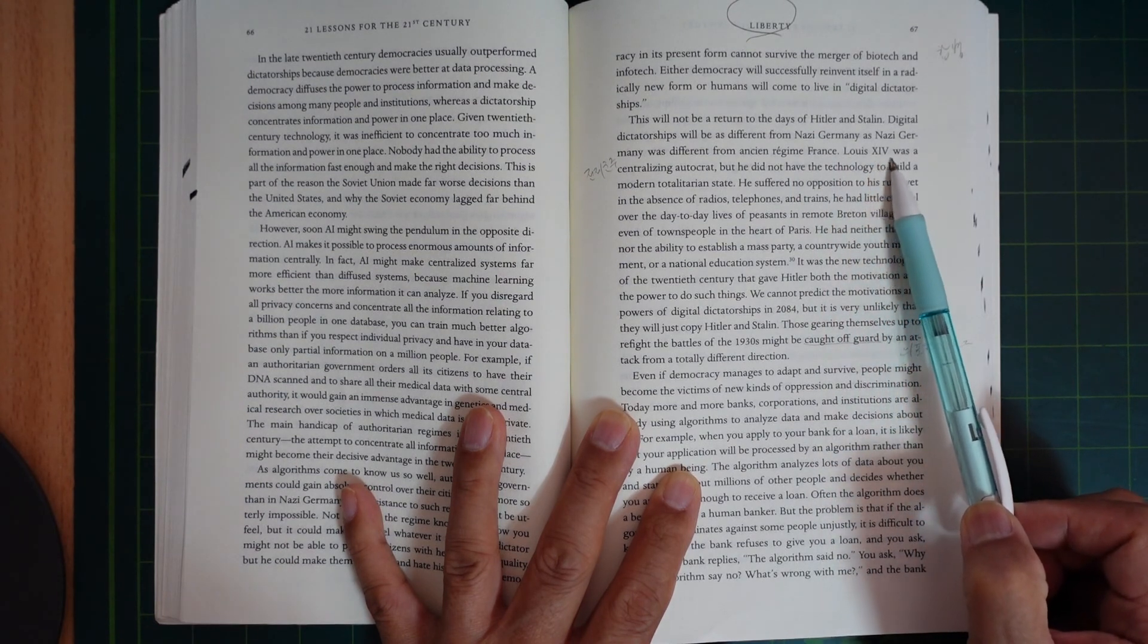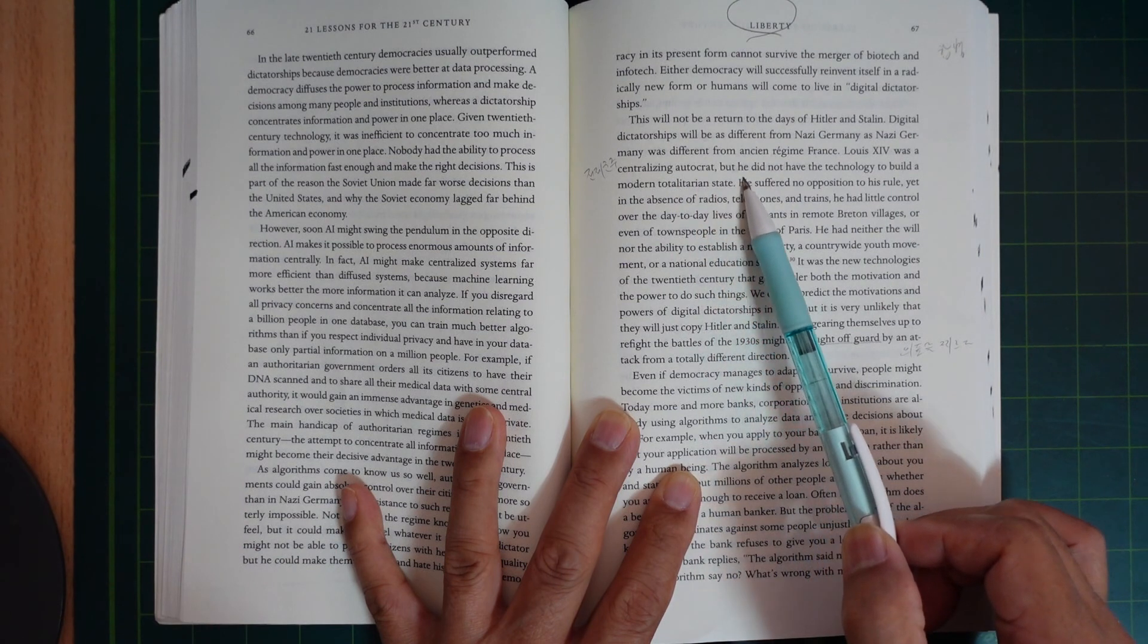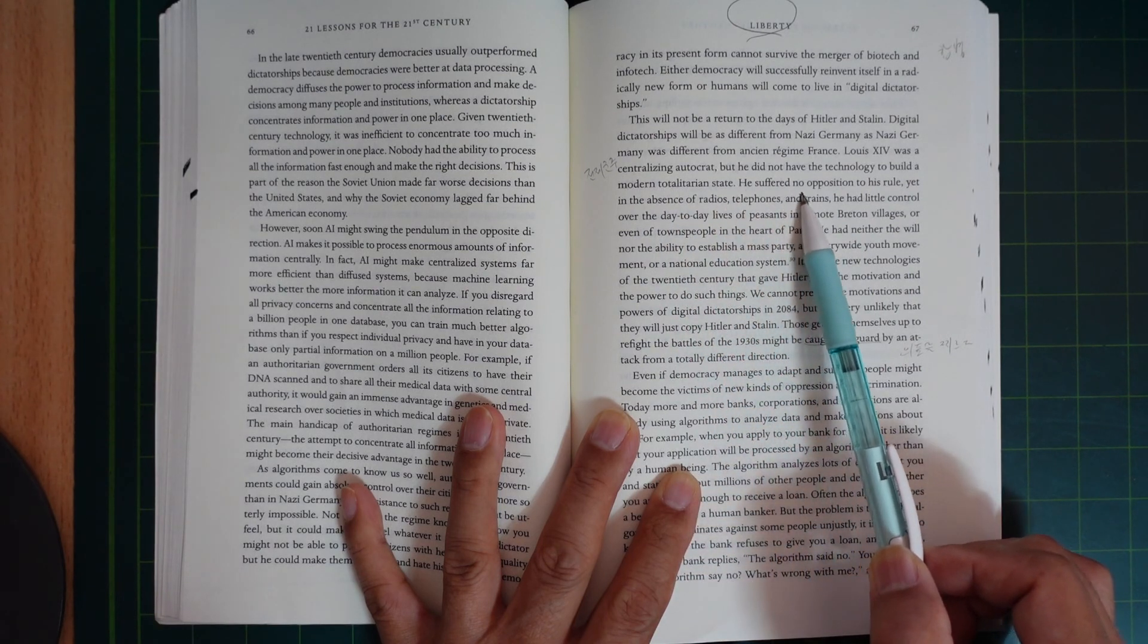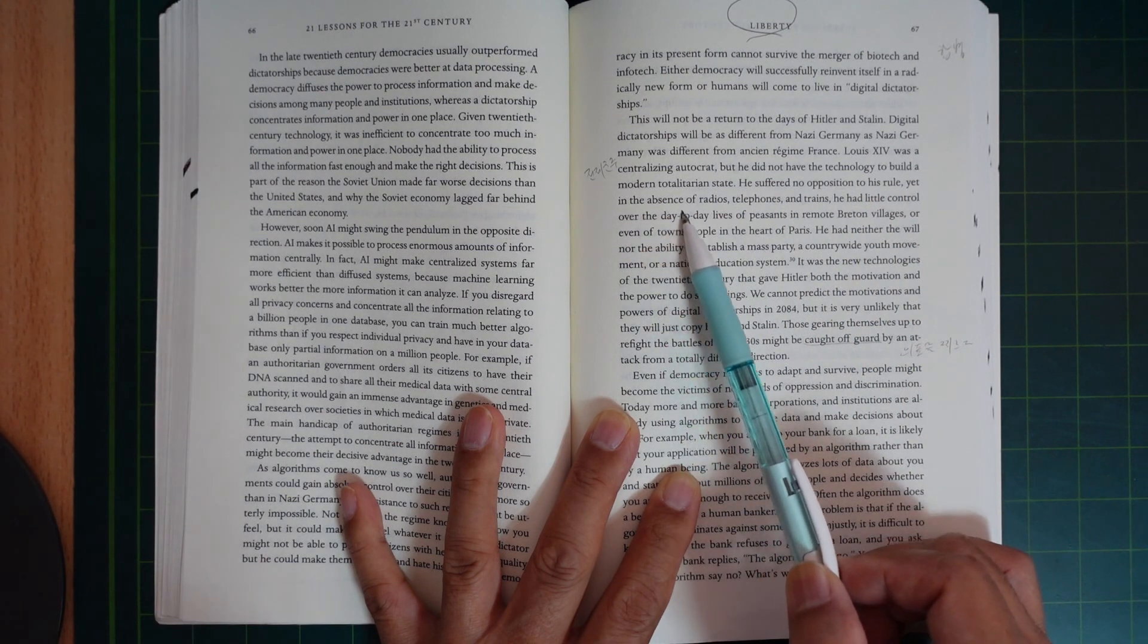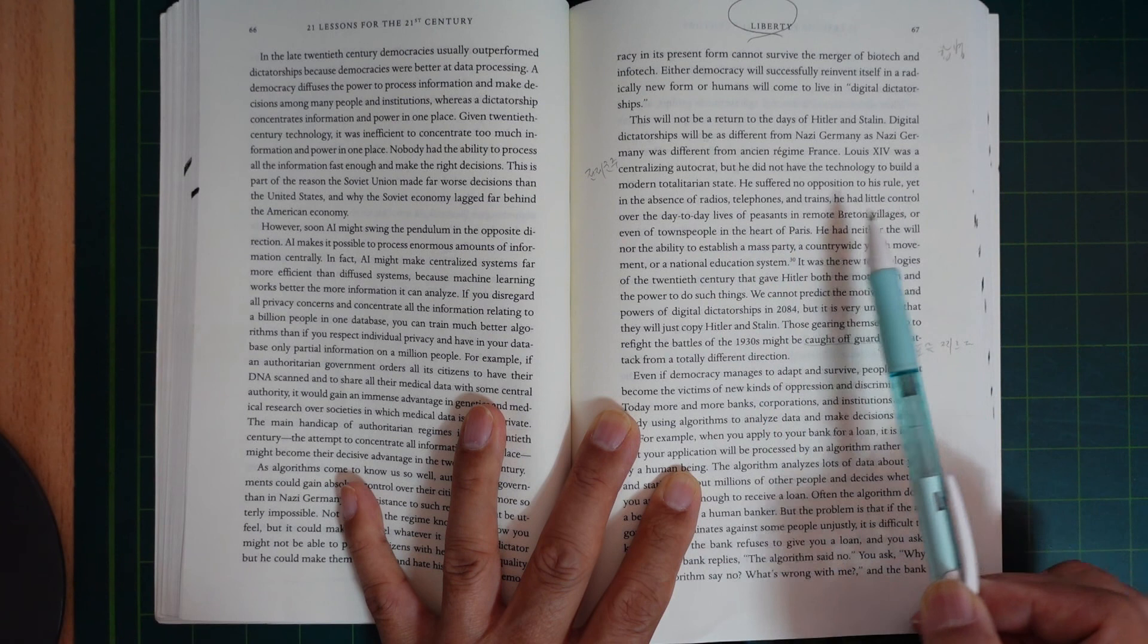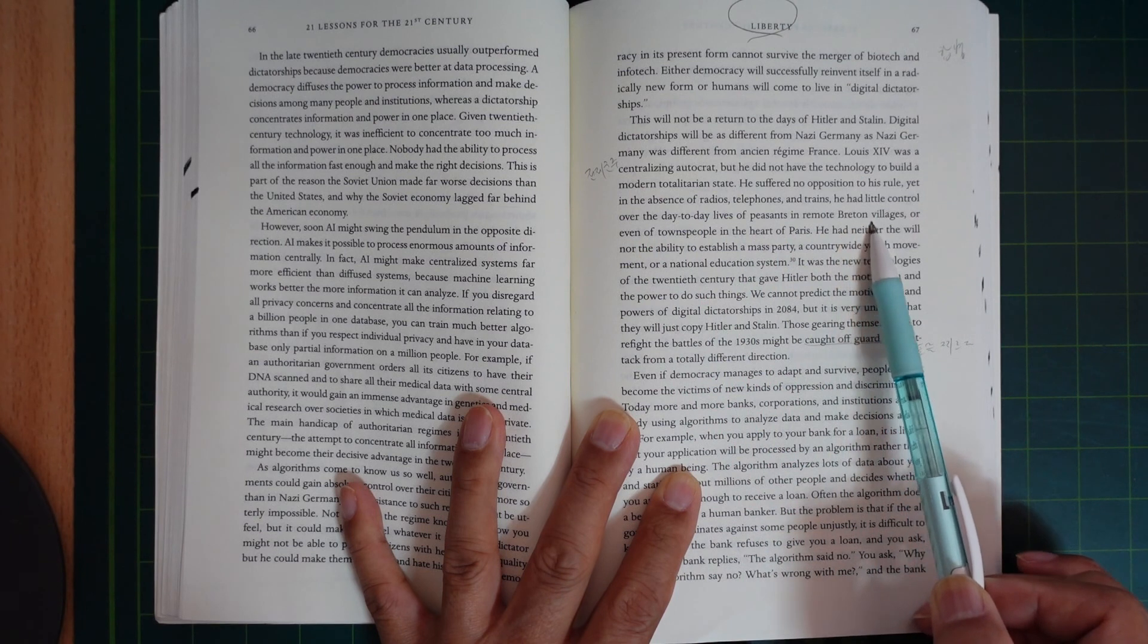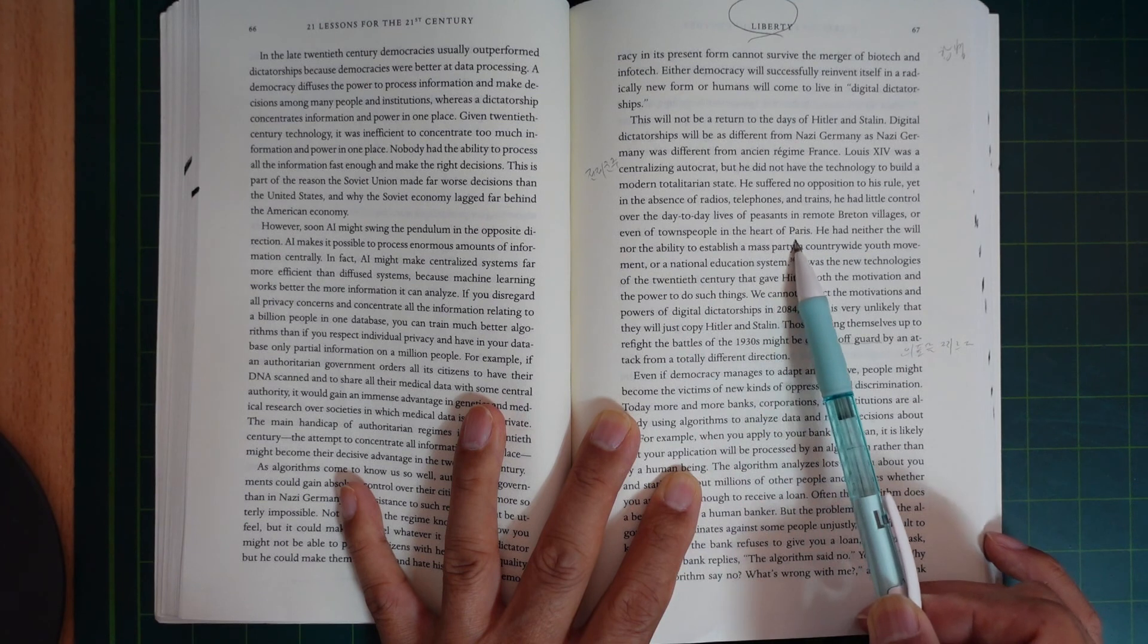Louis XIV was a centralizing autocrat, but he did not have the technology to build a modern totalitarian state. He suffered no opposition to his rule, yet in the absence of radio, television, and media, he had little control over the day-to-day lives of peasants in remote villages or even townspeople in the heart of Paris.